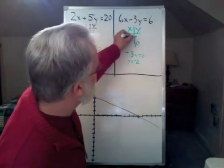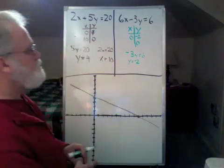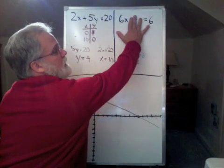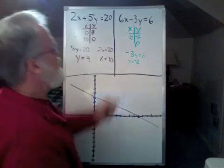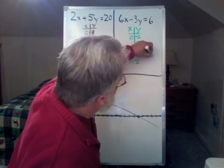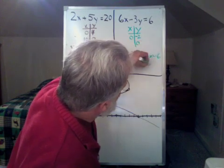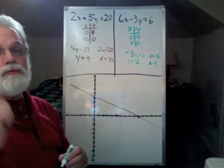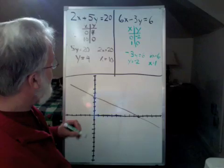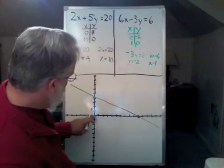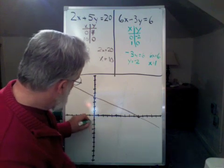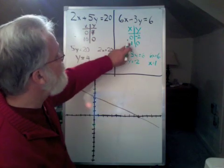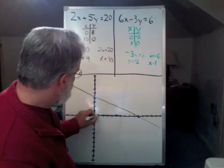And we do the second part. We set y equal to 0, and we wind up with 6x equals 6. When we do our division on that, we discover, not to our surprise, that x equals 1. So now we have two more coordinate pairs to plot. We have 0 minus 2. X is 0, Y is minus 2. And we have that x is 1 and y is 0. So that's this point here.